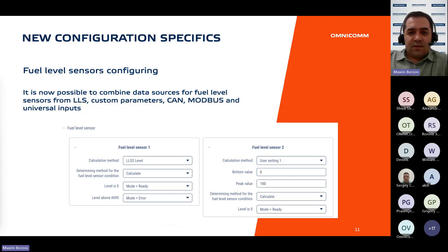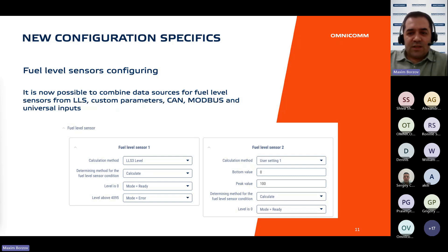The update introduces functionality for combining fuel level sensor data sources from various origins. While the traditional method relies on values within the LLS protocol fields only from GPS trackers, users can now simultaneously take values received from universal inputs, CAN fields, Modbus, and custom parameters.